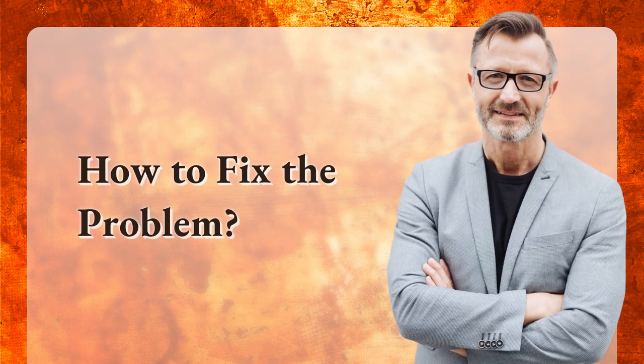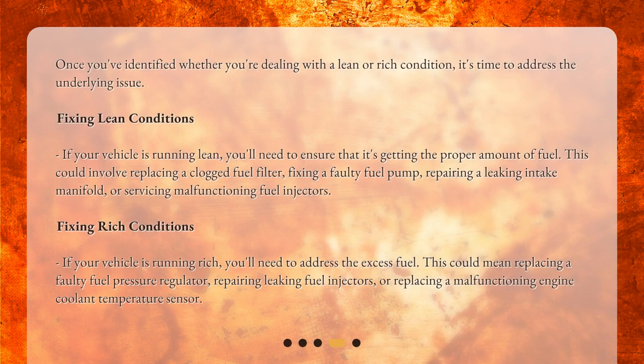How to fix the problem? Once you've identified whether you're dealing with a lean or rich condition, it's time to address the underlying issue. Fixing lean conditions: if your vehicle is running lean, you'll need to ensure that it's getting the proper amount of fuel. This could involve replacing a clogged fuel filter, fixing a faulty fuel pump, repairing a leaking intake manifold, or servicing malfunctioning fuel injectors.